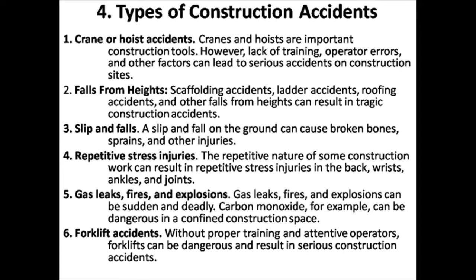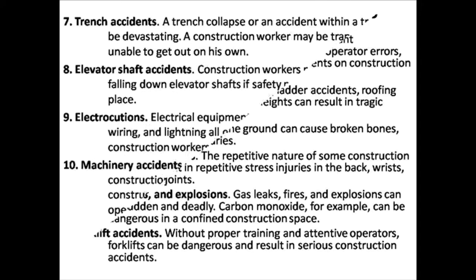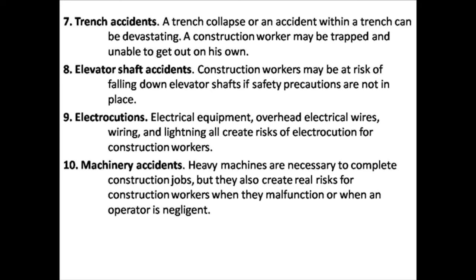Type 6: forklift accidents — without proper training and attentive operators, forklifts can be dangerous and result in serious accidents. Type 7: trench accidents — a trench collapse can be devastating, trapping a construction worker who is unable to get out alone. Type 8: elevator shaft accidents — workers may be at risk of falling down elevator shafts if safety precautions are not in place. Type 9: electrocutions — electrical equipment, overhead electrical wires, wiring, and lighting create risk of electrocution.